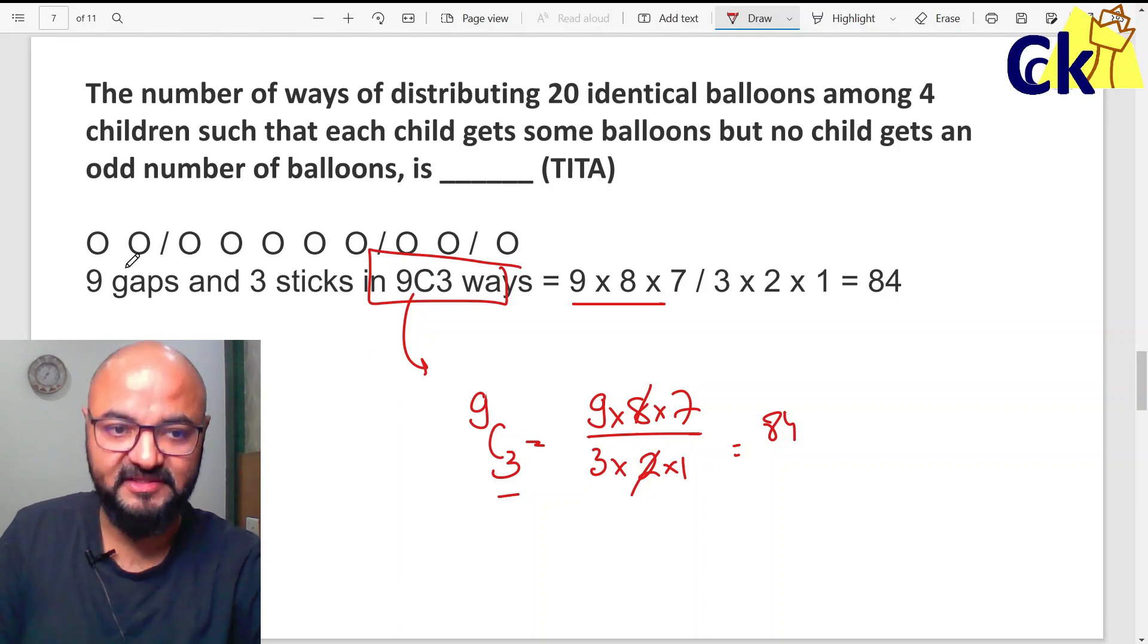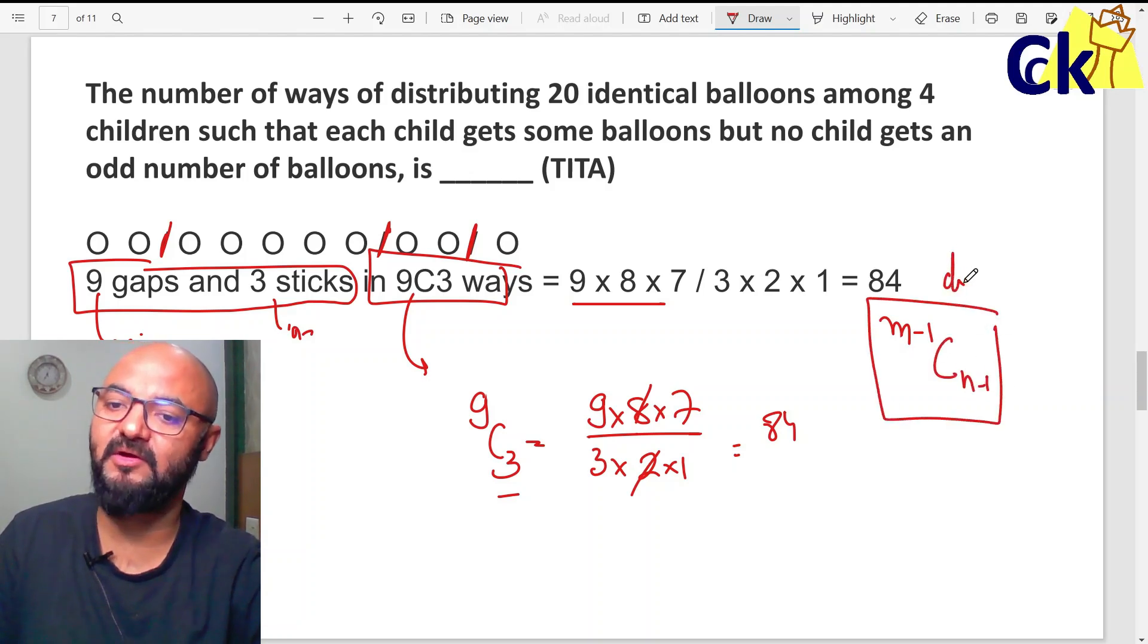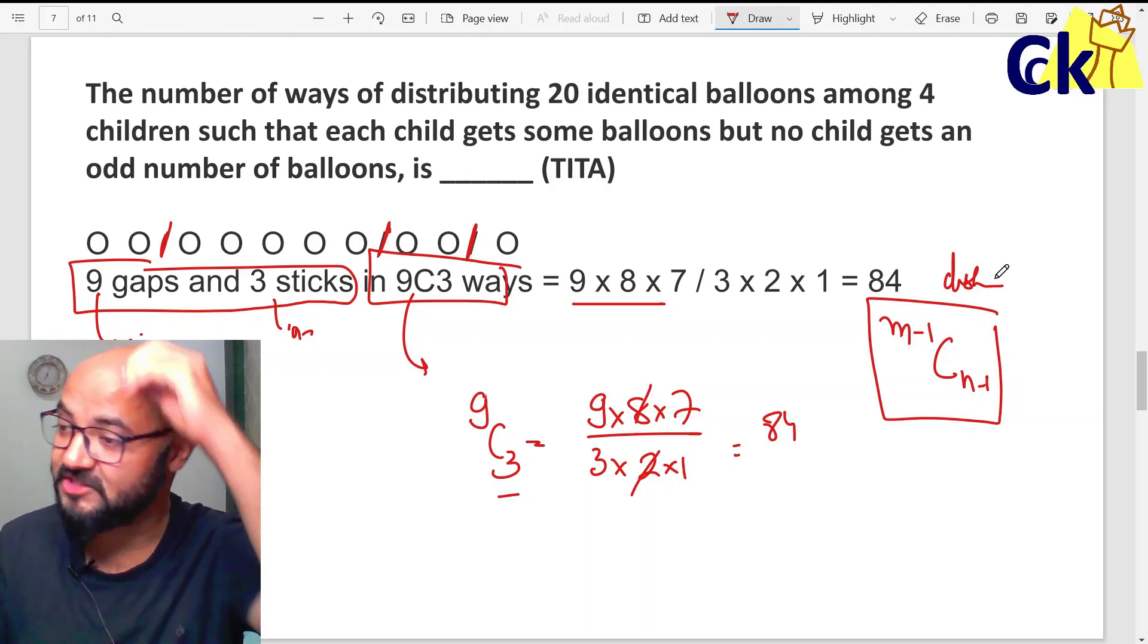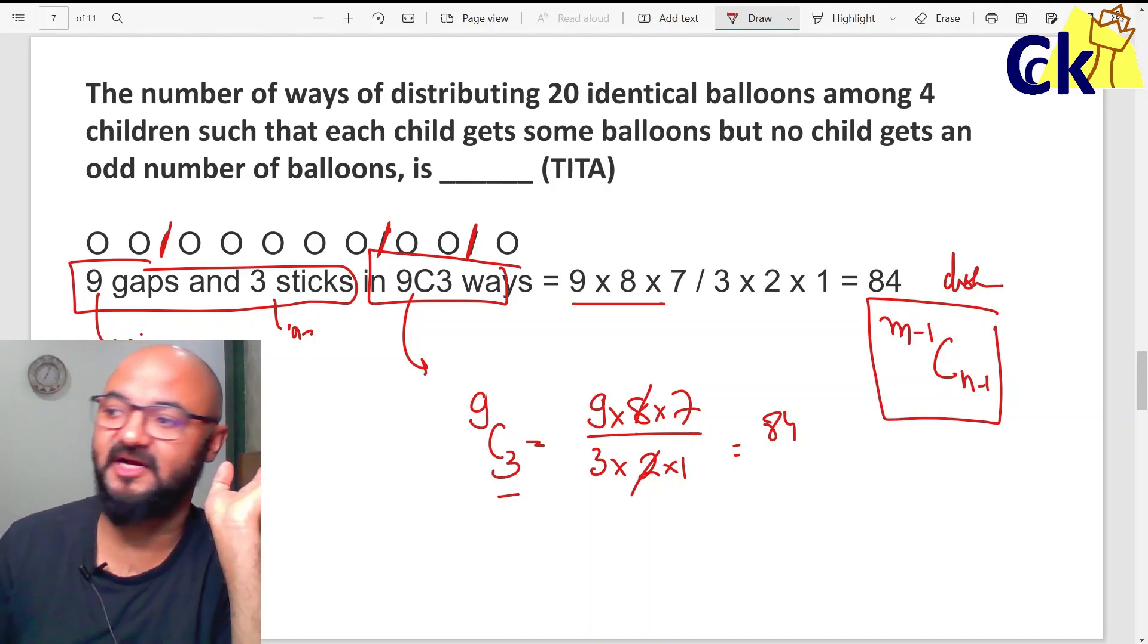Method number 2 is 10 balloons we are considering to be 9 gaps and 4 sticks we contract with 3 sticks, which is same as M minus 1, C N minus 1. Same formula. One formula only for distribution. This question CAT karne ka paka dekha. If not CAT, CMAT, NMAT, SNAP karne ka toh paka aata hai.